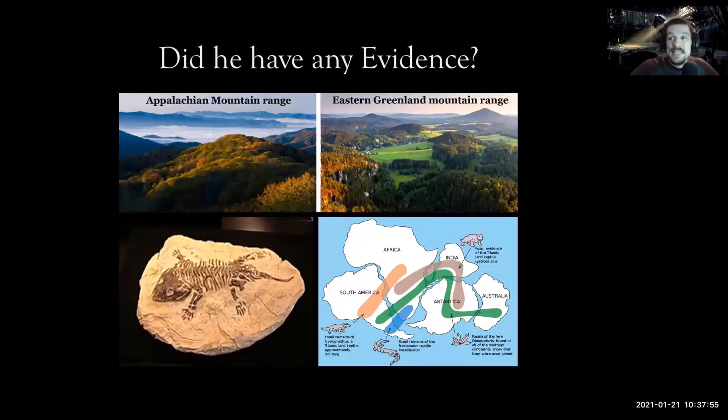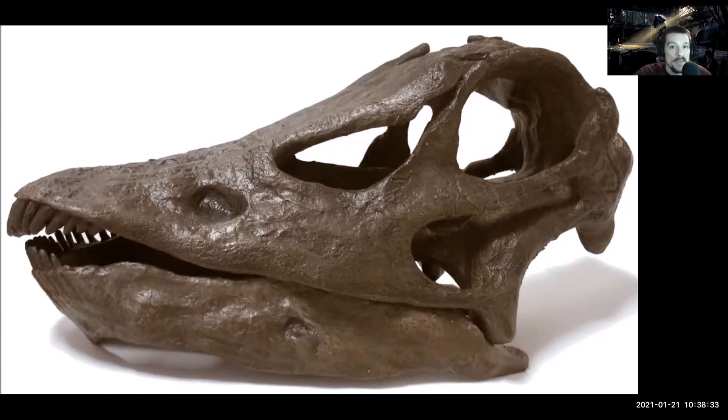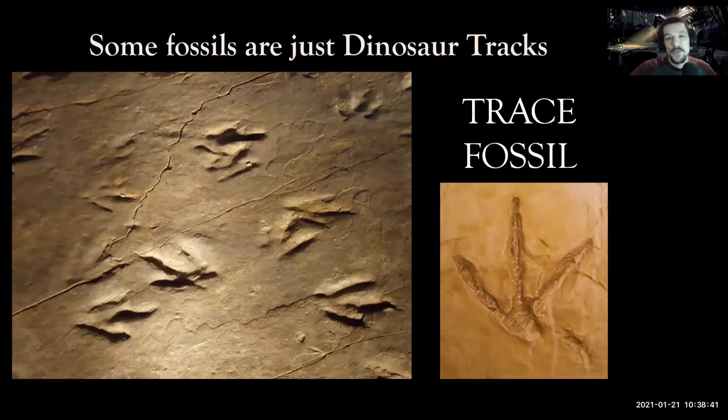We have some mid-ocean ridges forming where plates are moving apart, and we have areas where the plates are moving together. Not only did he think that the plates fit together like a puzzle, but he also found some other evidence. He tested rocks at the Appalachian Mountain ranges and the Eastern Greenland mountain ranges and found that those rocks had the same date. He also tested fossils. If you line up where he found these fossils, it connects all of the continents. This was evidence enough for him to say that these continents were definitely connected at one time.